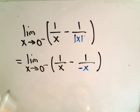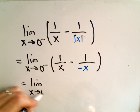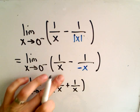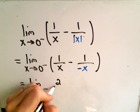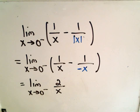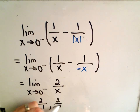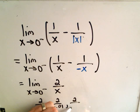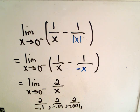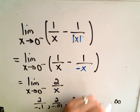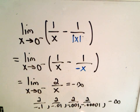Notice two negatives make a positive: 1 over x minus 1 over negative x becomes 1 over x plus 1 over x. We have common denominators, so we get 2 over x. Now we're taking 2 divided by a number close to 0 but negative. Dividing by a number getting closer and closer to 0 makes the result go to infinity in magnitude, but since it's negative, the limit approaches negative infinity.